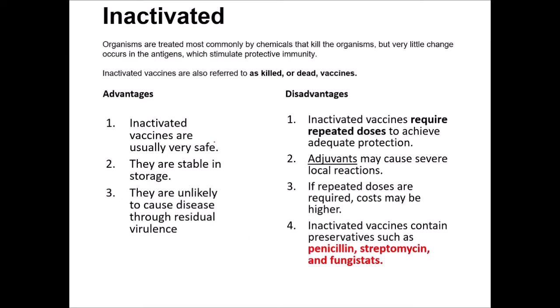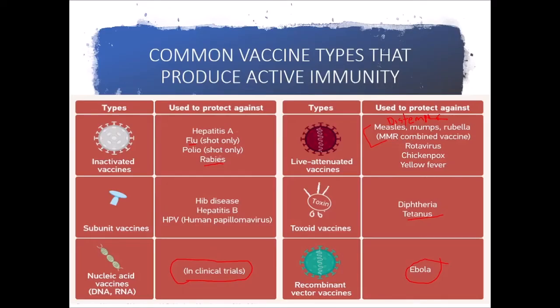Inactivated vaccines are organisms treated most commonly by chemicals that kill the organism, but very little change occurs in the antigen. They still stimulate a protective immunity, but they're the shell, so they're not going to create a disease. They're also referred to as killed or dead vaccines — you're basically treating with the corpse of the virus. They're very safe, stable in storage, and unlikely to cause disease through residual virulence. If you look at the diseases we're protecting against, especially like rabies or polio, those are very dangerous or deadly.